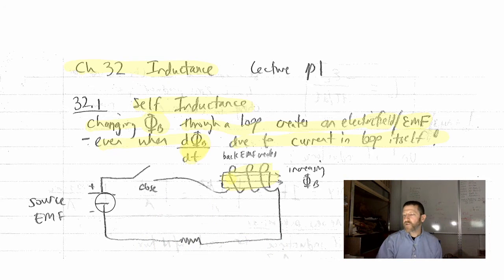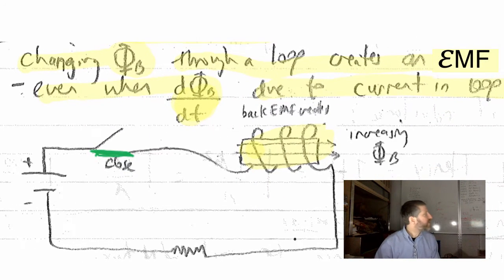If you've got a source EMF and I close this switch right there by connecting those two, I will start getting a current in that coil there. I will also start getting a magnetic field and therefore I will get a changing magnetic flux. Here's what I want you guys to do. With this coil that's indicated right on here,